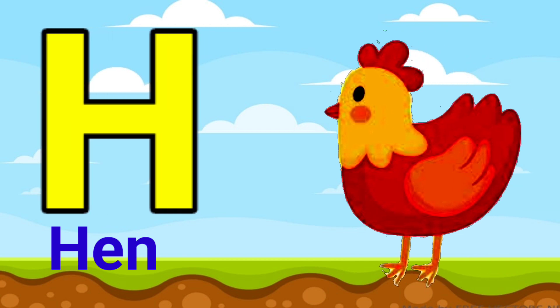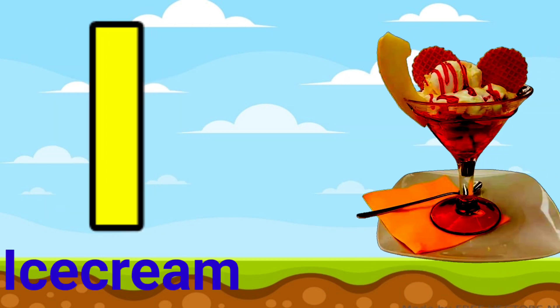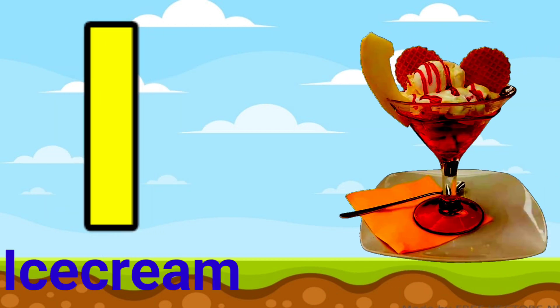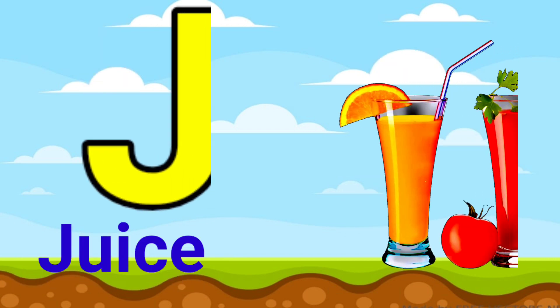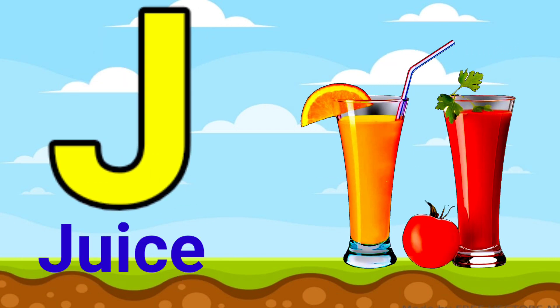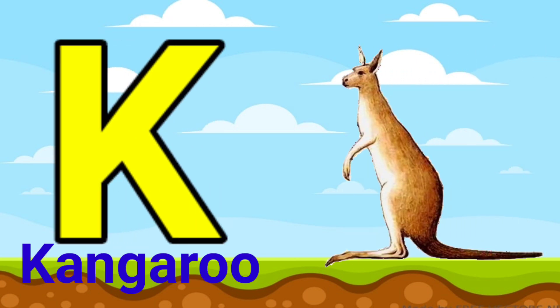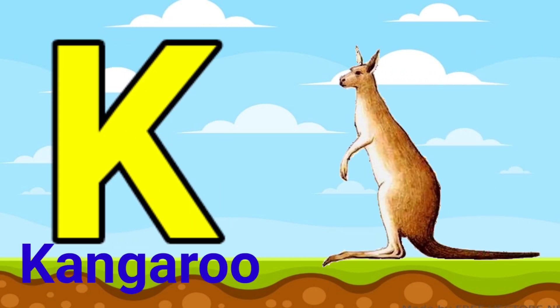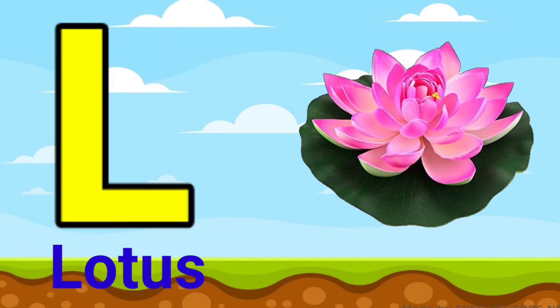I for ice cream, J for juice, K for kangaroo, L for lotus.